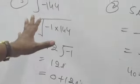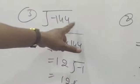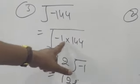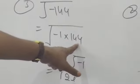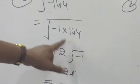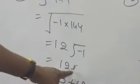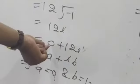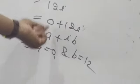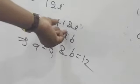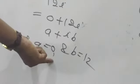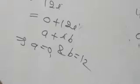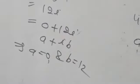So for √(-144): -1 × 144, √144 = 12 and √(-1) = i, giving 12i. Writing in A + iB form: 0 + 12i, so A = 0 and B = 12. Then 0 is the real part and 12 is the imaginary part of the complex number.